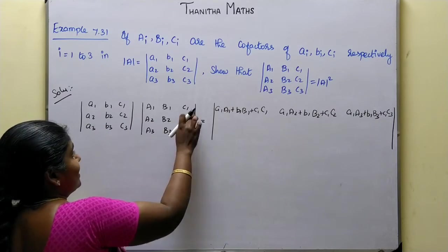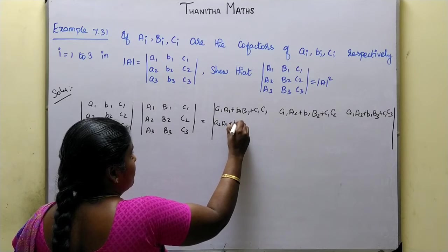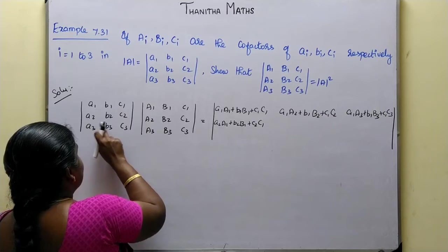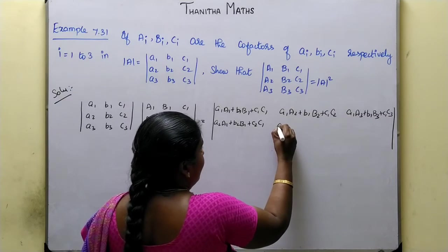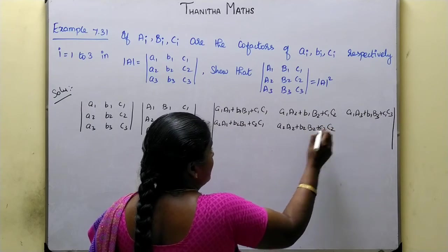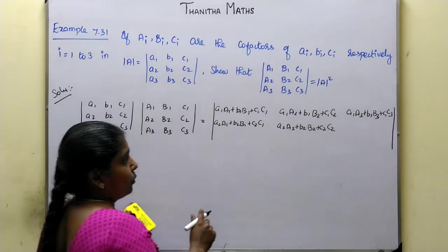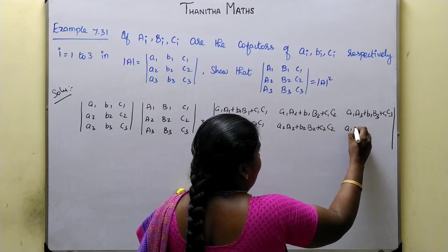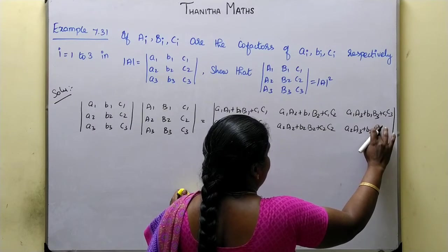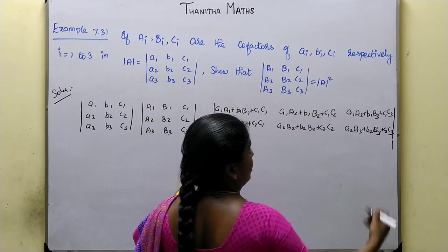Next, second row by first row: a2·A1 + b2·B1 + c2·C1. Second row by second row: a2·A2 + b2·B2 + c2·C2. Next, second row by third row: a2·A3 + b2·B3 + c2·C3. Okay, this is the second row.